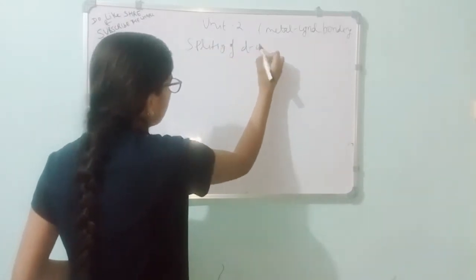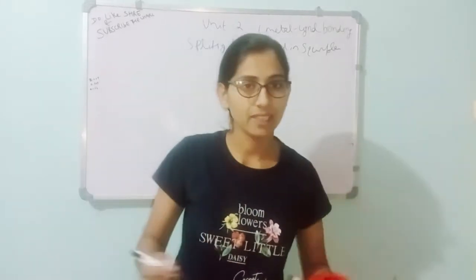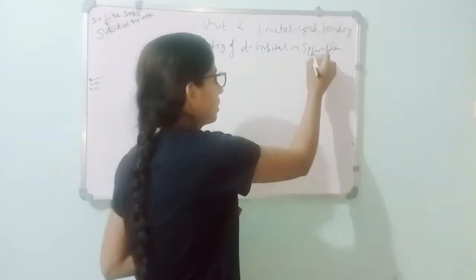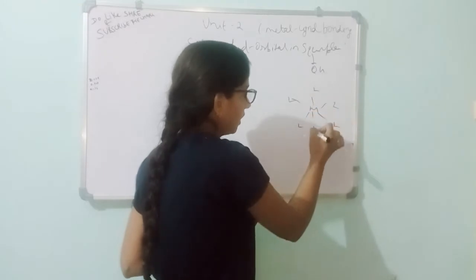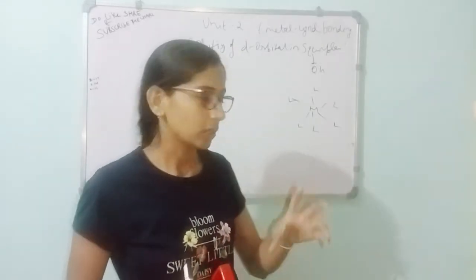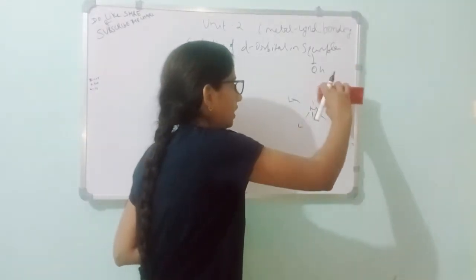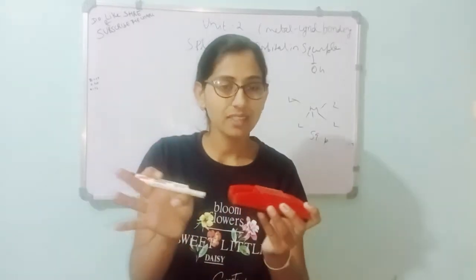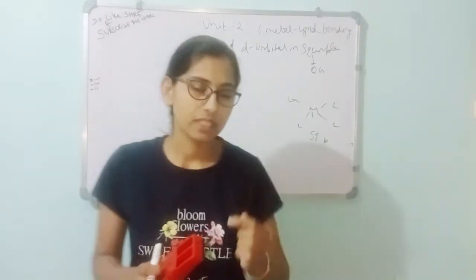In square planar complexes, we will discuss how to obtain the square planar complex from the octahedral. From the octahedral, we will completely remove the ligands along the z-axis, as we discussed in the distortion to square planar. In the octahedral you have 6 ligands; the two ligands along the z-axis are completely removed. So now we call this the square planar — octahedral has 6 ligands, and removing the two z-axis ligands gives the square planar complex.